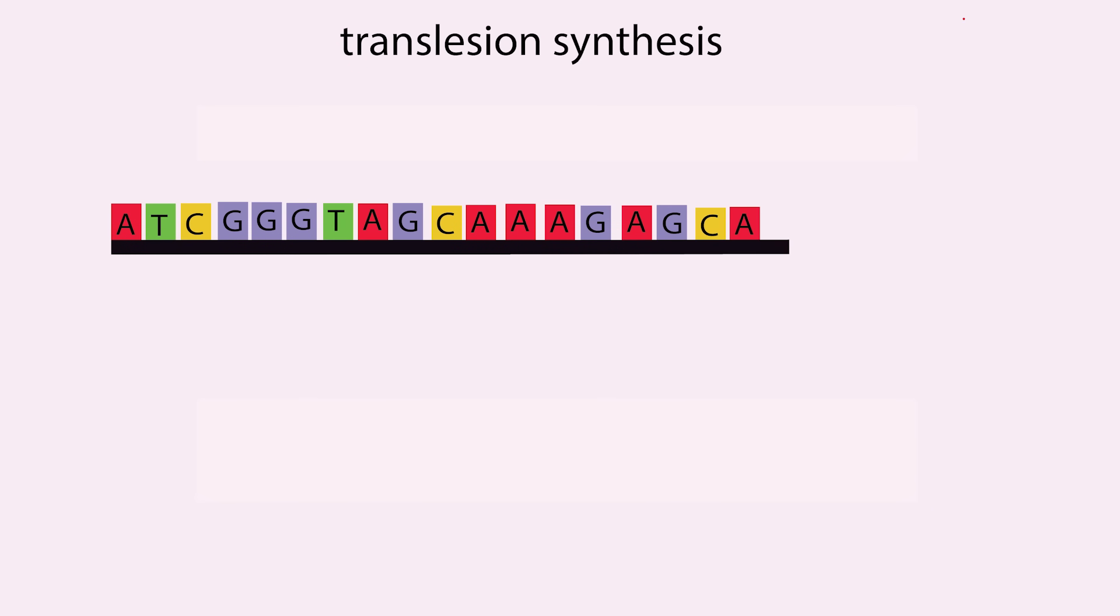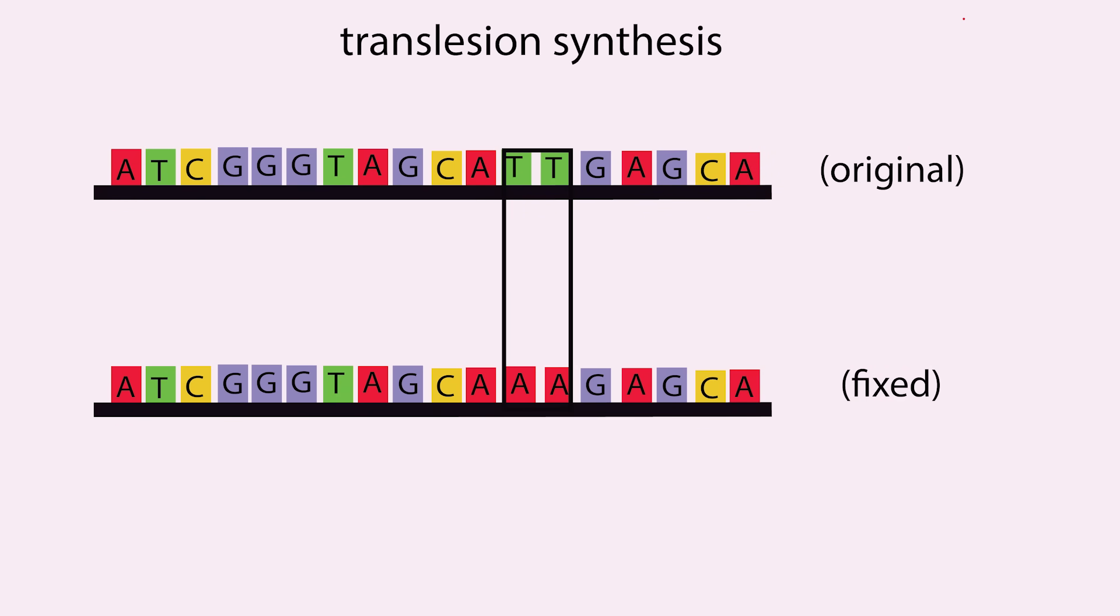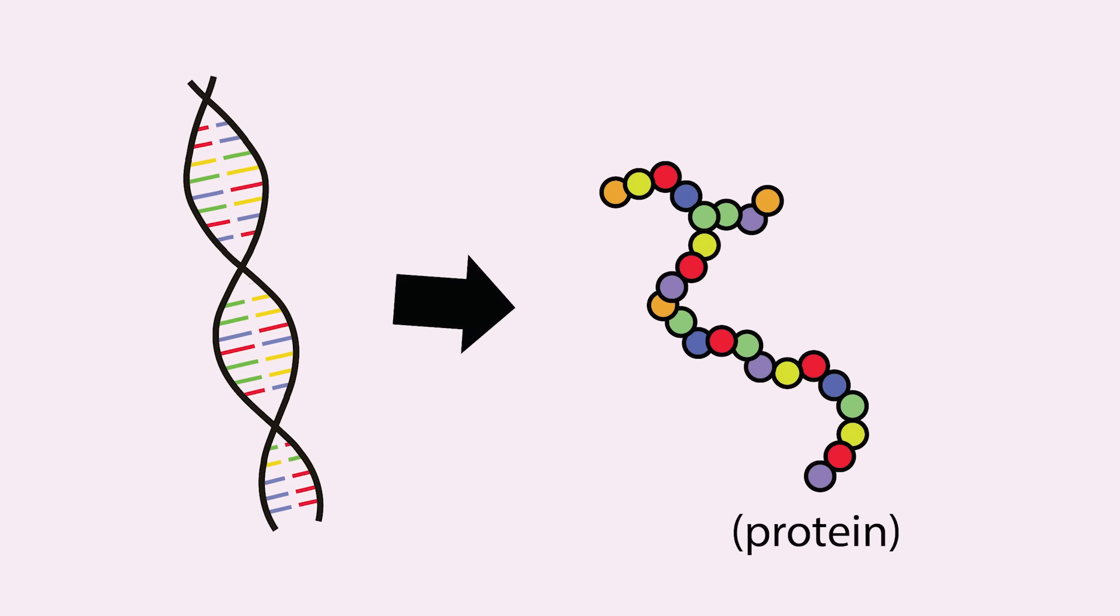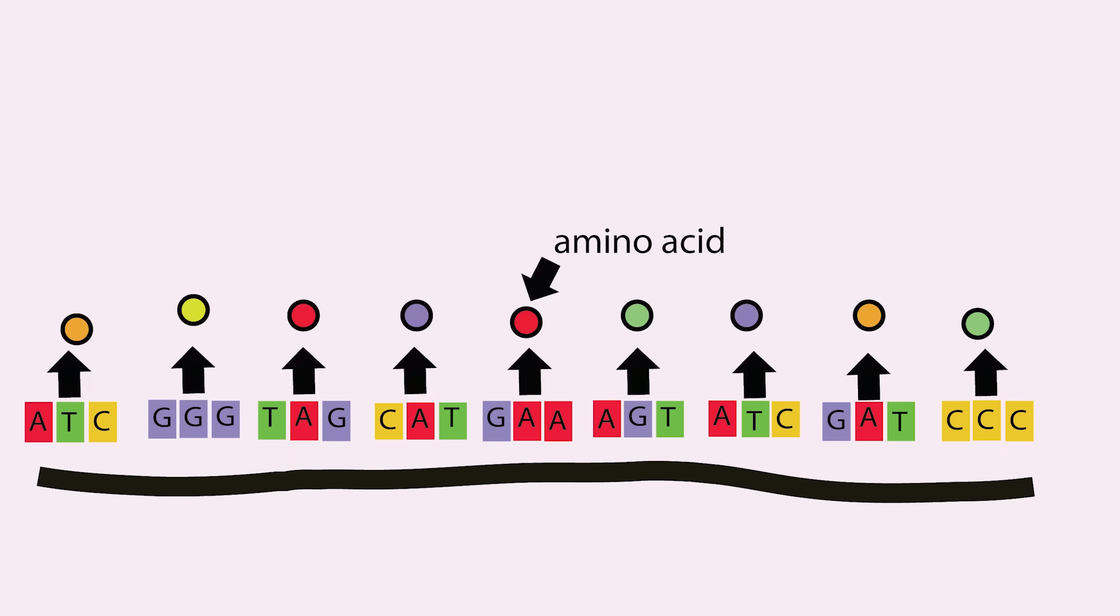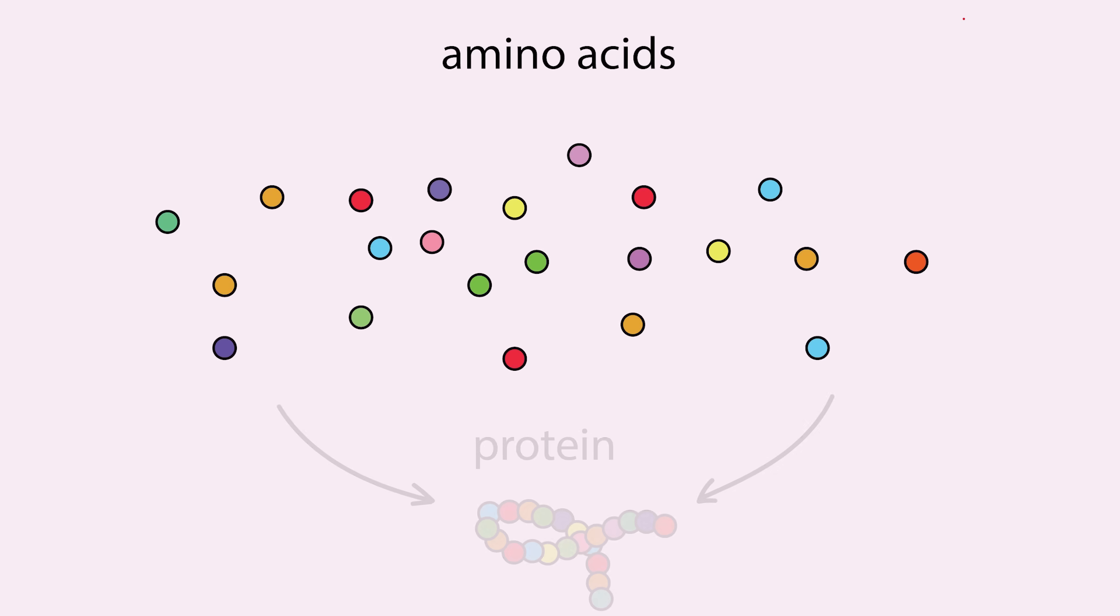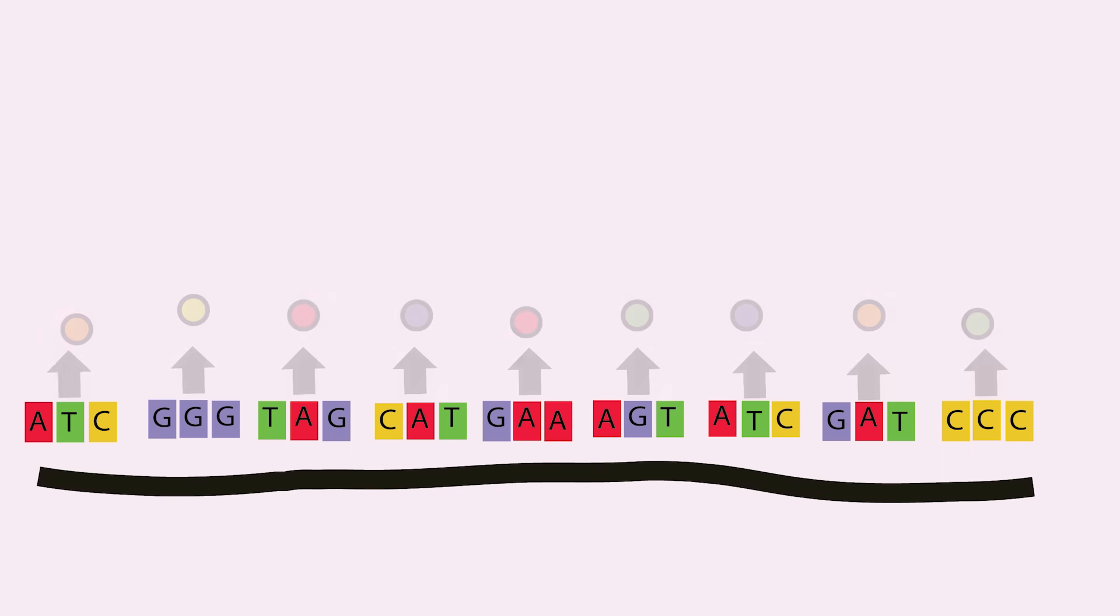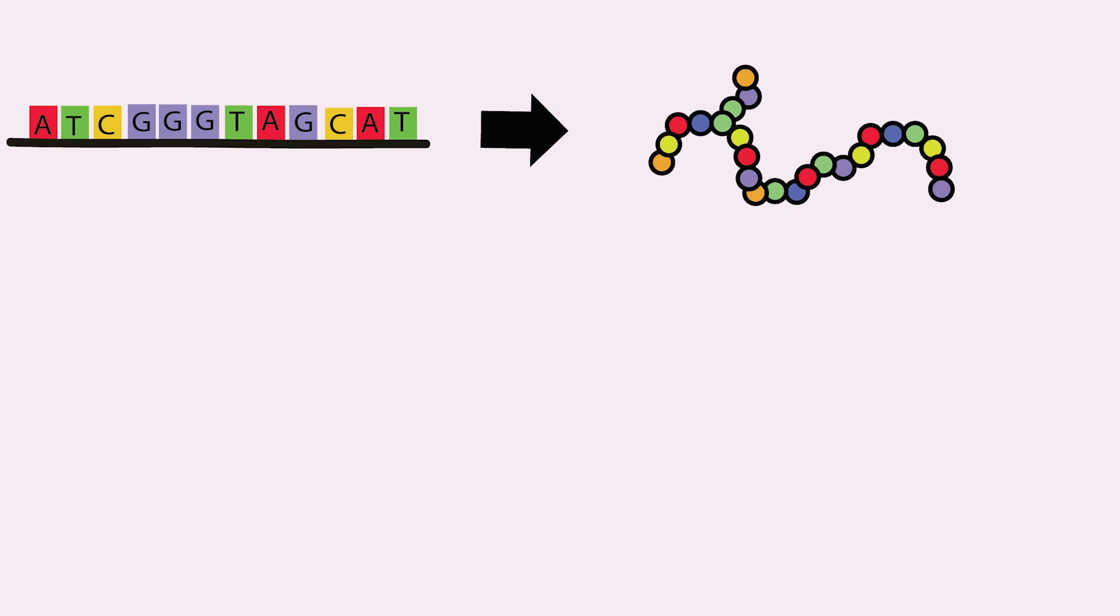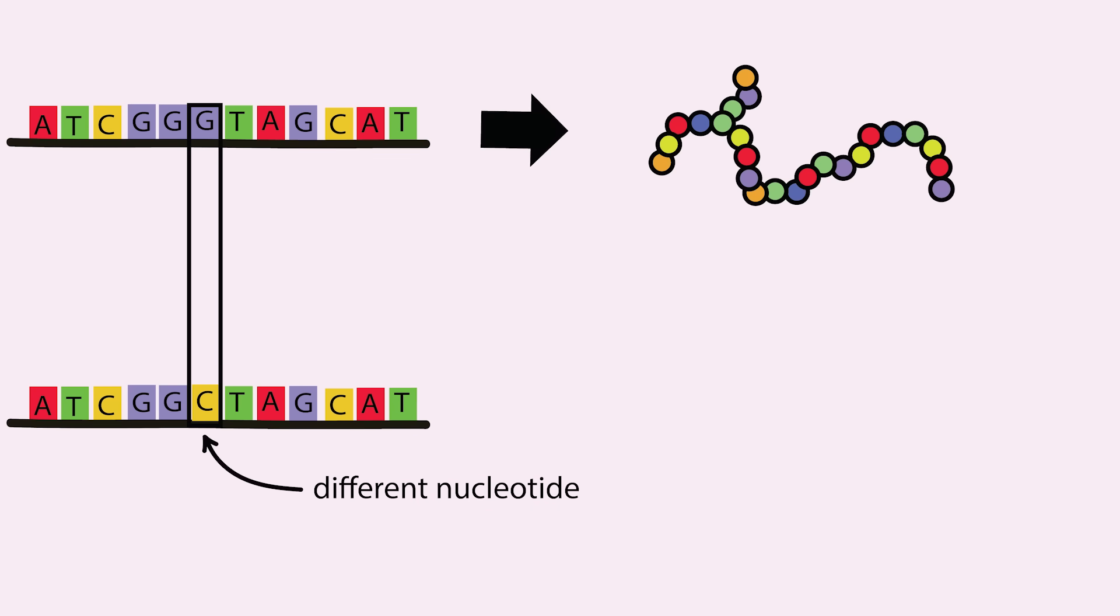But there's a small problem. Translesion synthesis can sometimes put the wrong nucleotide in place, making a different DNA strand from the original. This becomes a major problem when the DNA is used to make protein. DNA is used as a guide to assemble amino acids into protein. Amino acids are the building blocks of protein. Proteins are essential for the body as they take on many different roles. Some are used as cell structures, enzymes, receptors, and even messengers. In a DNA strand, every three nucleotides code for an amino acid. If the DNA sequence for some reason is wrong, then the incorrect amino acids will be made, and the protein won't function properly.